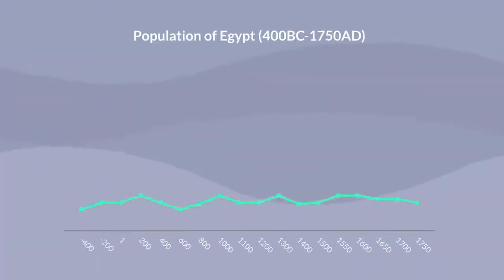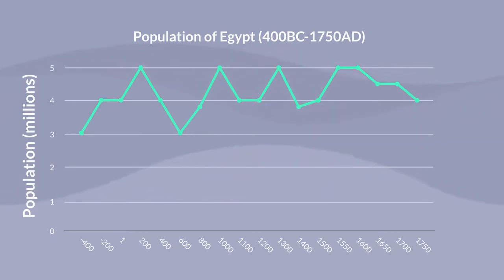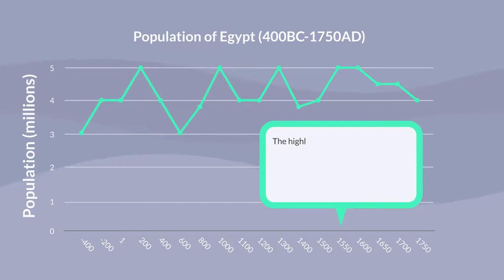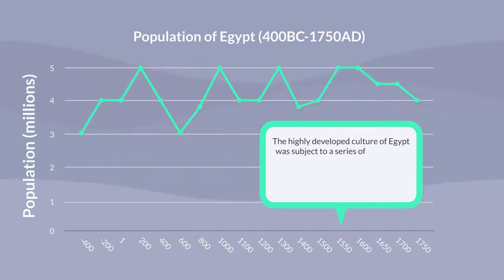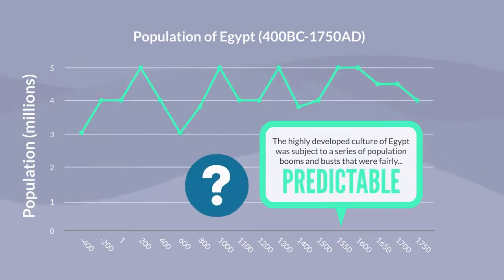For example, this graph shows the population of Egypt from 400 BC to 1750 AD. As you can see, the highly developed culture of Egypt was subject to a series of population booms and busts that were fairly predictable. What accounts for this?